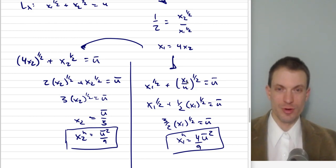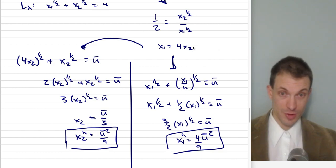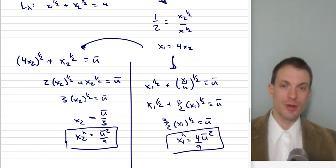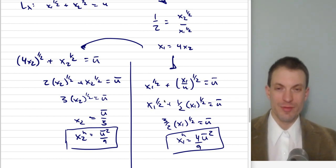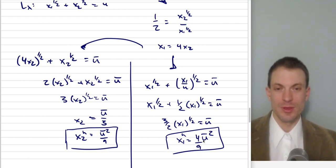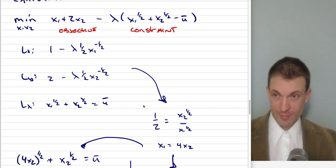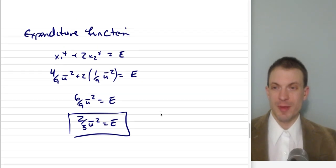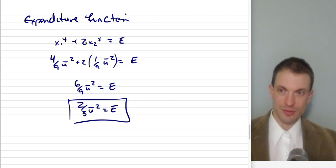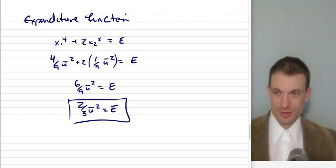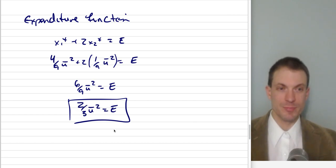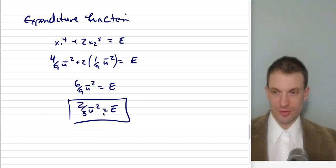To find the Hicksian demand for good one, I substitute x₂ = x₁/4 into the utility constraint. The square root of four is two, so I get one of these quantities plus one-half of these quantities — that's three-halves of x₁^(1/2) — and solving gives the Hicksian demand for good one as (4/9)u². Plugging both Hicksian demands into the expenditure objective, I get e = (4/9)u² + 2·(1/9)u² = (2/3)u². This is our expenditure function, and it's worth noting this is the inverse of the indirect utility function.